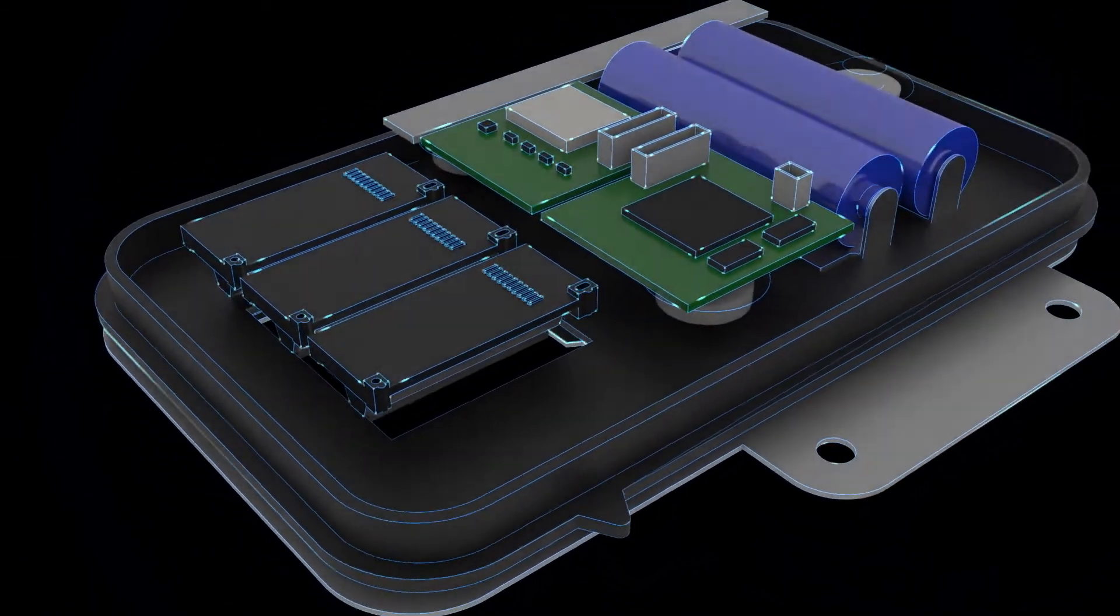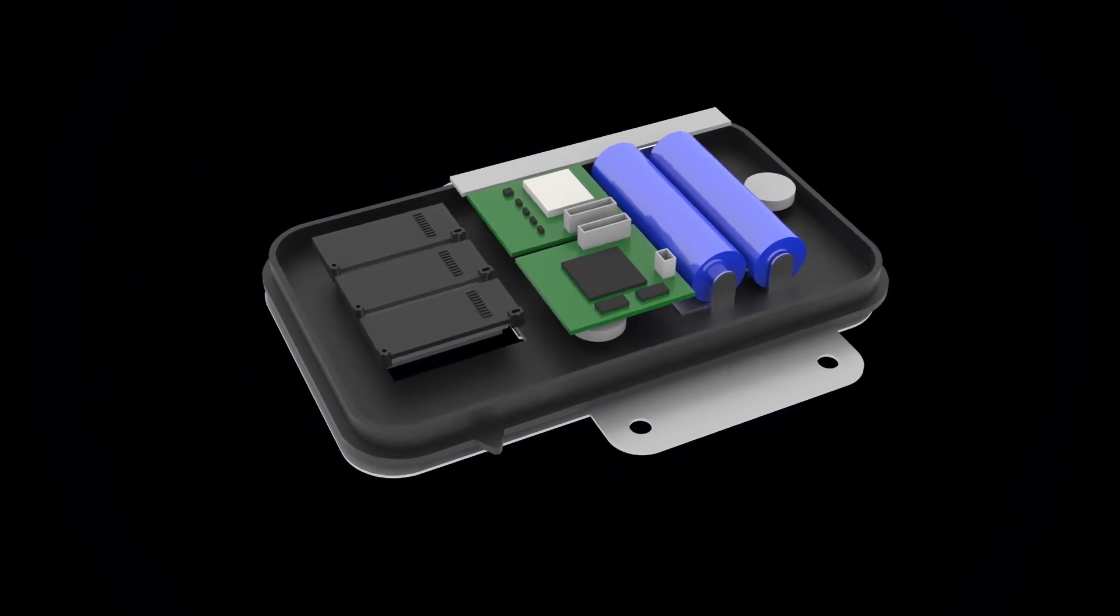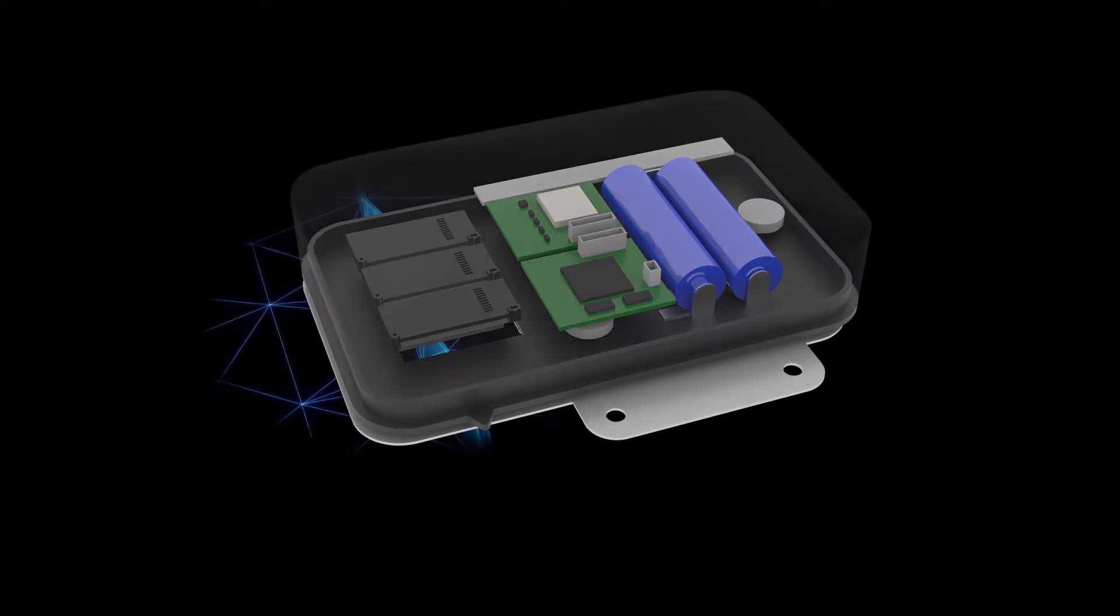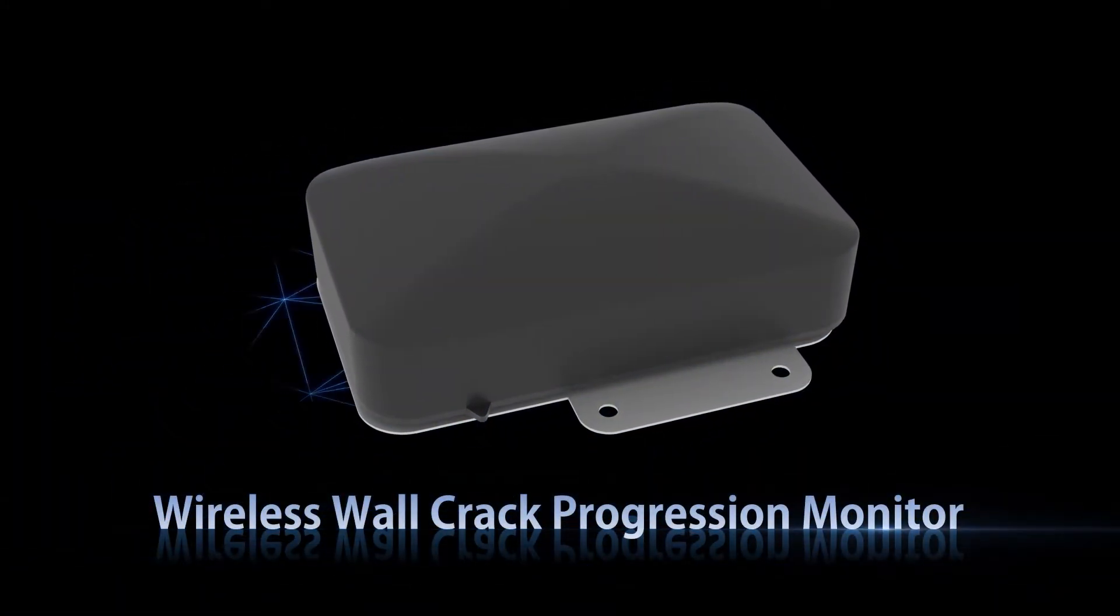The module can regularly and remotely measure the progression of cracks in other areas requiring monitoring and wirelessly send such data to the monitoring center. This module is called the Wireless Wallcrack Progression Monitor.